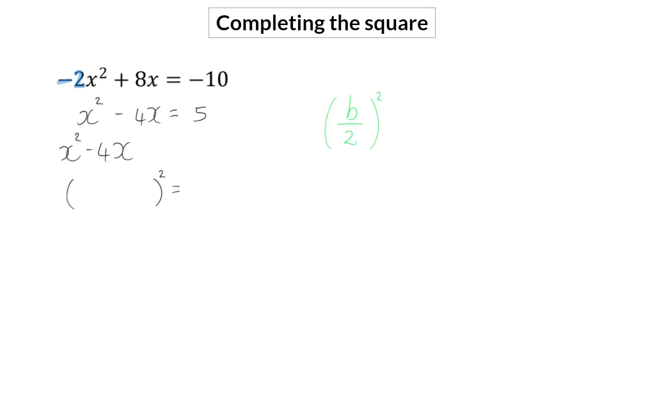In the example, the b value is minus 4, which we then divide by 2 to get minus 2, and then square, which means we'll add 4 on both sides.